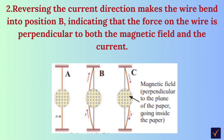By reversing the current direction, the wire bends into position B. This indicates that the force on the wire is perpendicular to both the magnetic field and the current. The magnetic field is perpendicular to the plane of the paper, going inside the paper as shown in the diagram. The magnetic field lines do not intersect; they travel from north to south pole, are parallel, and have the same intensity.